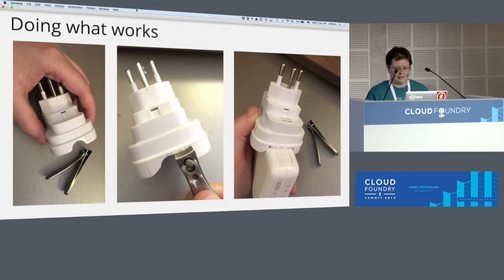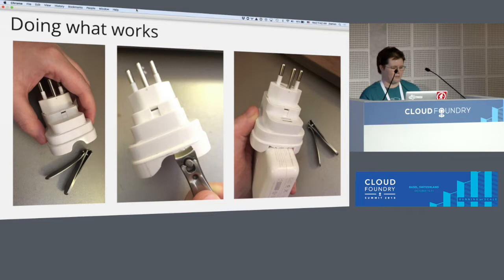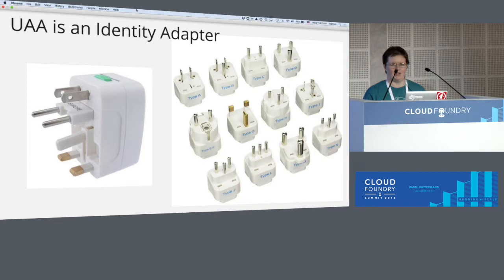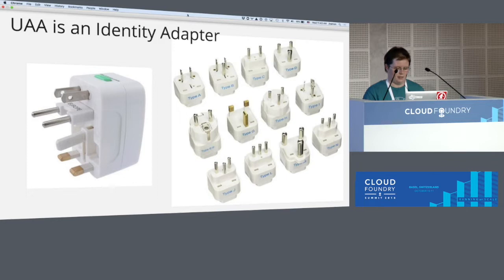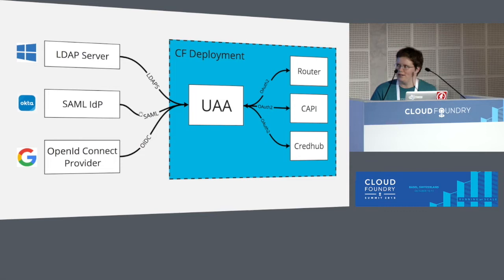The lesson I wanted to take from this is that adapters are extremely valuable — without this I wouldn't be able to run through these slides — but also fairly complex, and they need to be working just so. That's really the value proposition of the UAA within Cloud Foundry: it's acting as an identity adapter. In a world with many competing standards all solving the same or similar problems in slightly different ways, the UAA wants to be that super adapter that will let you bring all of your identity information, no matter the source, and plug it directly into the platform.